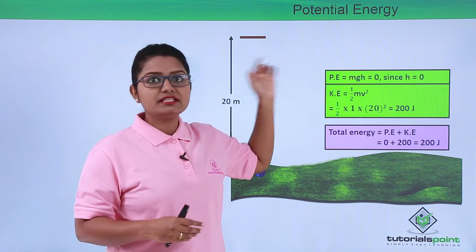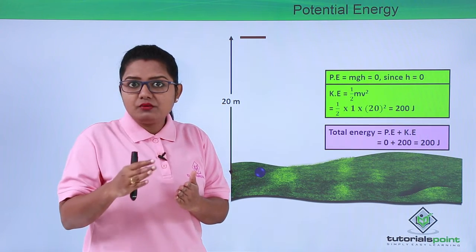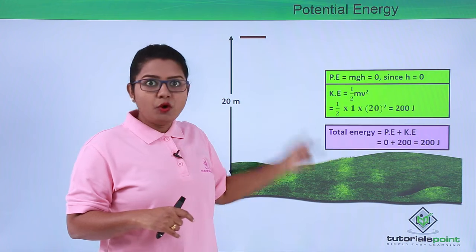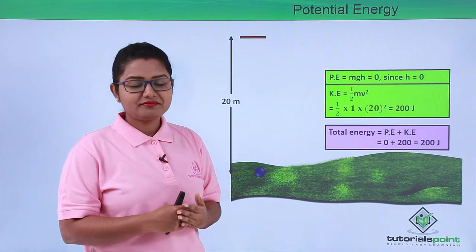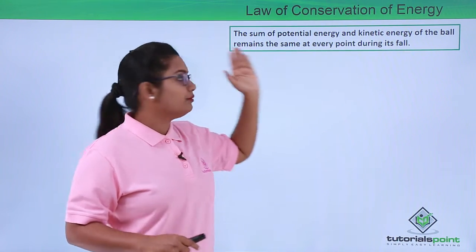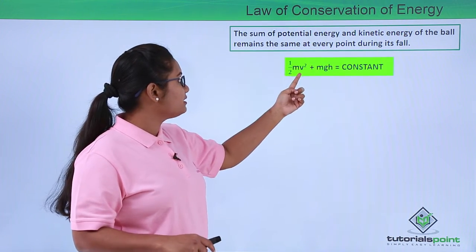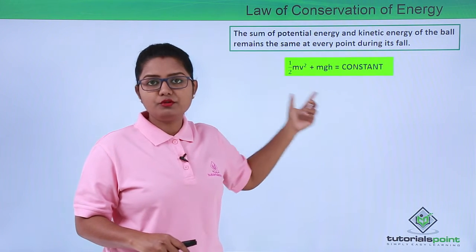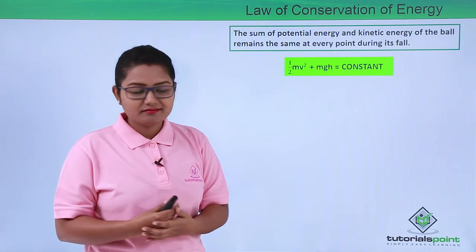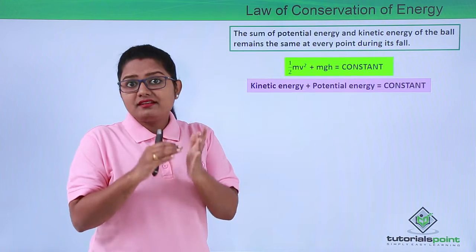Even though one form of energy — potential energy — is converted to kinetic energy gradually, the amount of potential energy lost is exactly equal to the total amount of kinetic energy produced. That is how the constancy of the total energy was maintained. We conclude from this whole discussion that the sum of the potential energy and kinetic energy of the ball remains the same at every point during its fall towards the ground. This essentially means that half mv squared plus mgh equals a constant, which we found to be 200 joules.